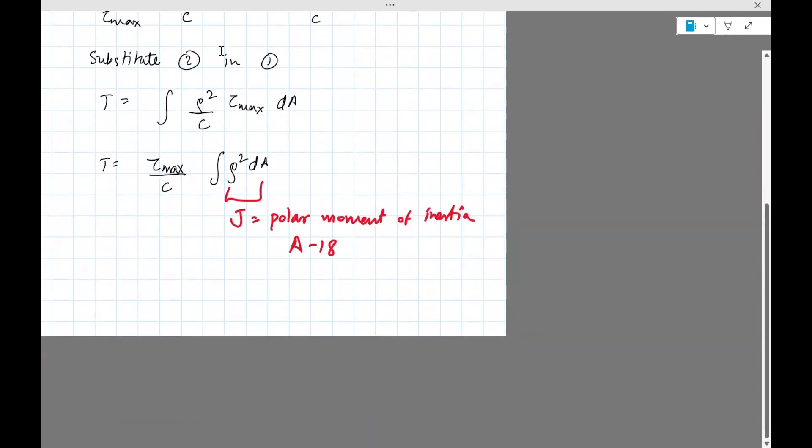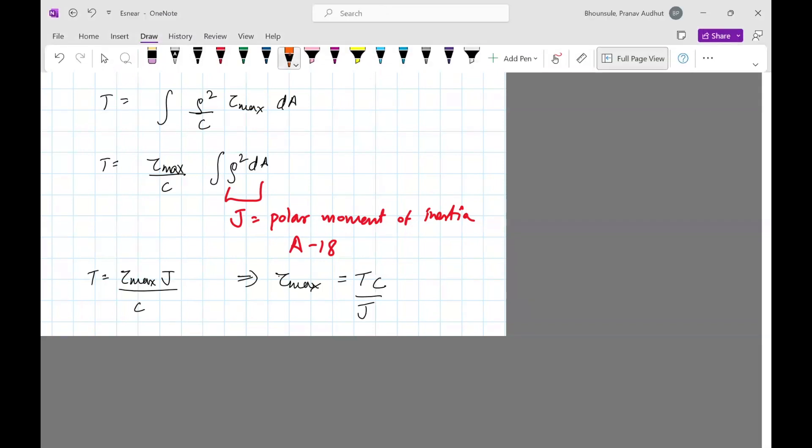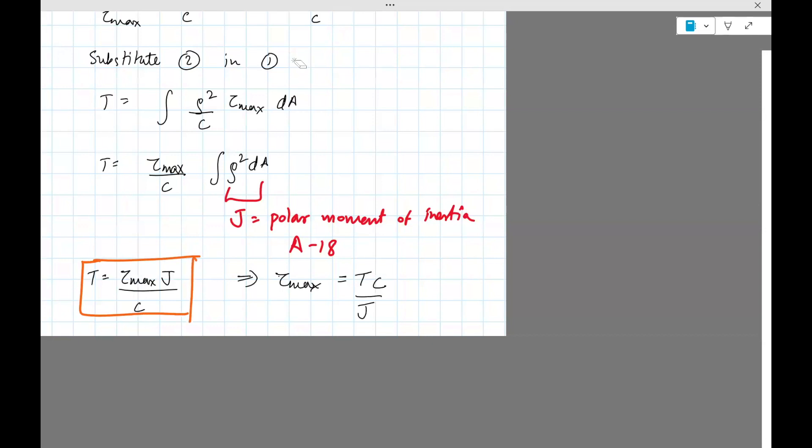Okay, so let's write the formulas which we are interested in, which will be helpful for solving problems. It's T equals tau max J divided by C. Or you could also write tau max as T C divided by J. Okay, this depends on what's asked, what's unknown. This is one formula. If you want to solve for tau max instead, that's the formula.